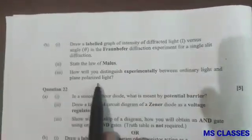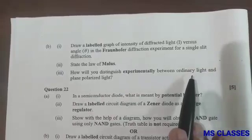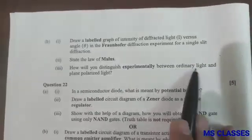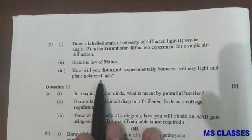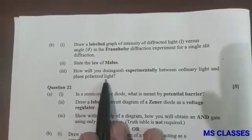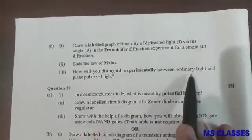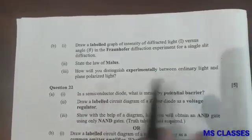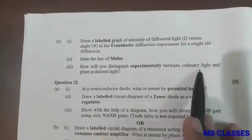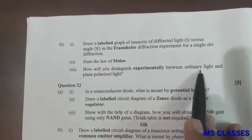How will you distinguish experimentally between ordinary light and the plane polarized light? So ordinary light travels in all directions, whereas in the plane polarized light that component travels in a particular direction. So if you just put a polaroid in front of the ordinary light and the plane polarized light, you can see that will allow only one component to pass through it.